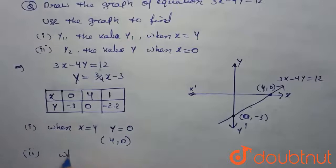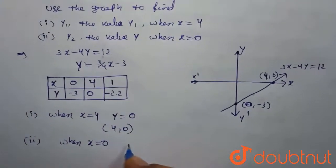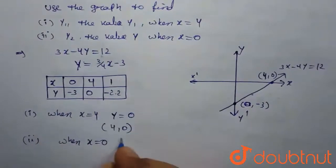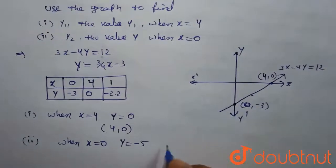Second one, when x is equal to 0, when x is equal to 0, the value will be minus 3. Therefore, these two are points from graphical method.